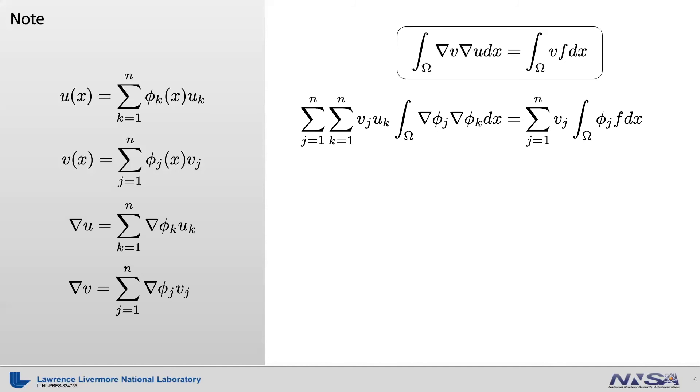Let's plug these functions to the weak form, then we get this equation. By the way, it is important to remember now that the test function V was arbitrary. The weak form must be satisfied for any test function. This implies that this equation must be satisfied for each index J. Now, it is the observation time. Here, everything is known except the scalar U sub K with index K. So, this can be considered as an unknown vector U.